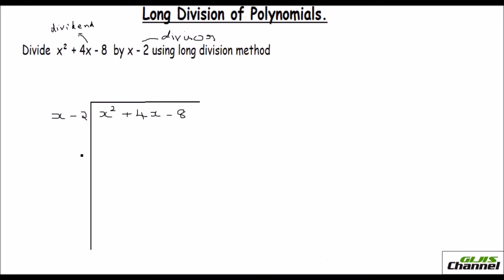So now what should we do first? Just look at this x term and see what you need to multiply this x with so that you get the first term here. You need to multiply x with an x to make it x squared. So x times x would give you x squared. Write the answer here, that is x. Now you need to multiply both these with this x, so x minus 2 times x gives minus 2x.